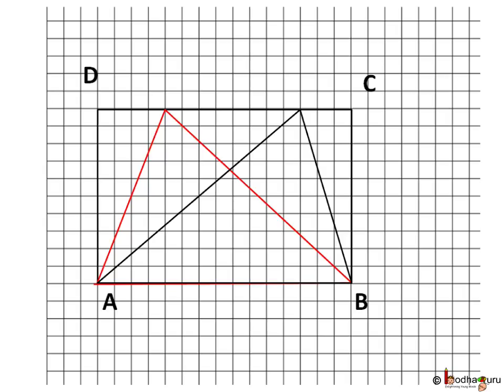So no matter how many triangles you draw inside a rectangle with base as AB and height same as the width or breadth of the rectangle, their area would be the same. Because if you count the squares, you will find that the area of each triangle is half of the rectangle.